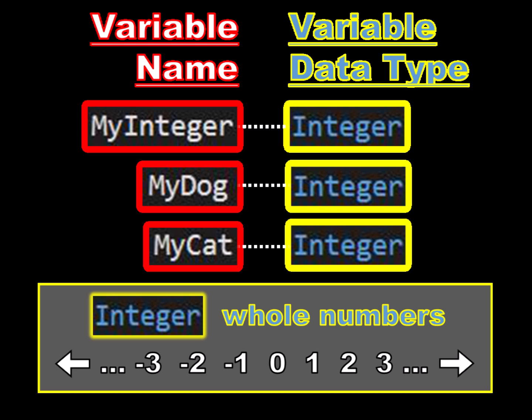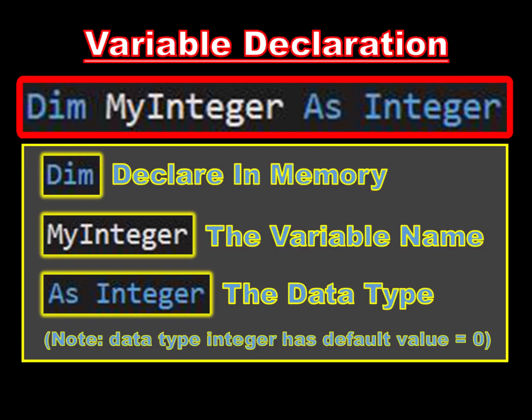An integer can be positive, negative, or zero. Before we can use a variable in our code, we must declare it. We do this by writing a dim statement. For the variable named my_integer, we would write: dim my_integer as integer. Dim is an acronym for declare in memory. By writing a dim statement in our code, memory space is allocated for the potential values of that variable.